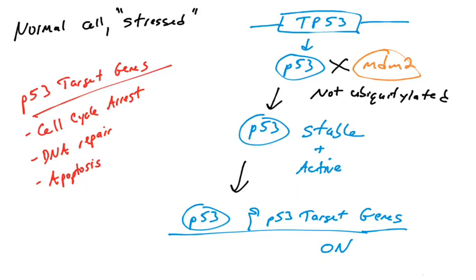We will see in later videos how p53 can allow the cell to reenter the cell cycle if the stress has been addressed. So that introduces p53 and its function as a transcription factor and the first level of p53 regulation, which is just its interaction with the MDM2 ubiquitin ligase protein.